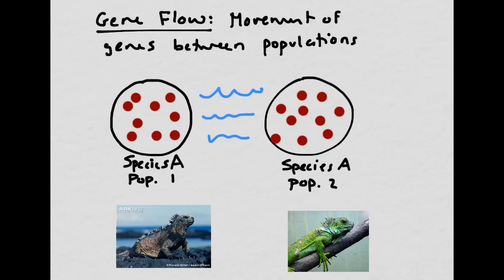Now we're going to look at a real-world example from the Galapagos. There are two types of iguanas in this area — they originally were the same species and actually look really similar. The green one on the right is a tree-dwelling iguana, and the one on the left is called a marine iguana. The marine iguana is out on the Galapagos Islands and actually swims to hunt food, whereas the green tree-dwelling iguana basically never comes down from trees. Because there's a big ocean between the Galapagos and Ecuador, you wouldn't have any gene flow between the two populations.